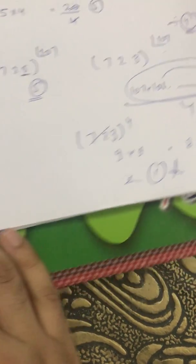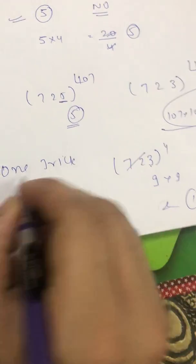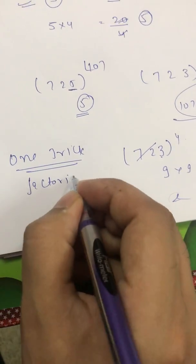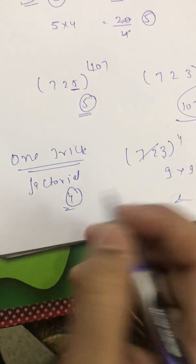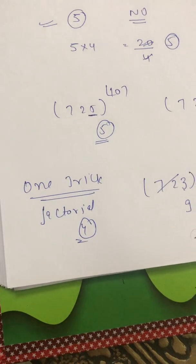So can I conclude one trick from this? Whenever I am getting this factorial over there I will directly write the power as 4 there is no need to check there is no need to solve.